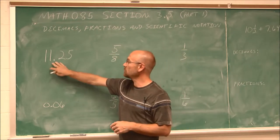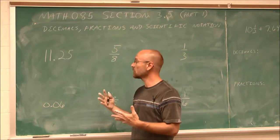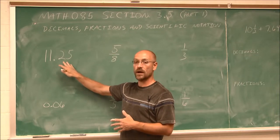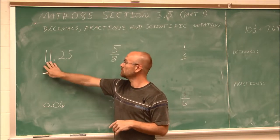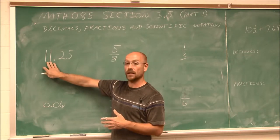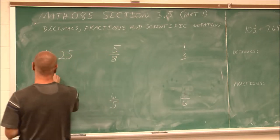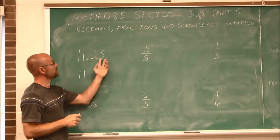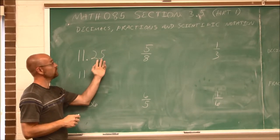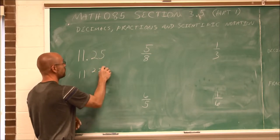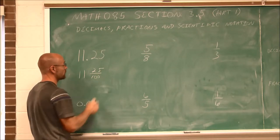This first example, I have 11.25. If we are familiar with our place values, we can write this as a fraction. The value that is the whole value, 11 in this case, I would just write as 11. Now I look at what is the decimal value. It's 0.25. That would be 25 one hundredths. So I write it as 25 one hundredths.